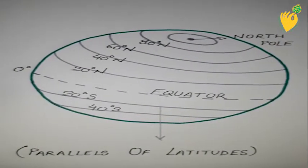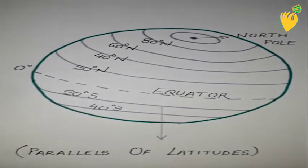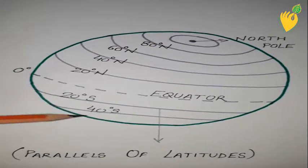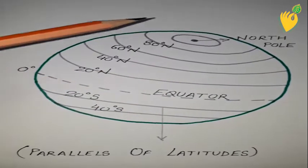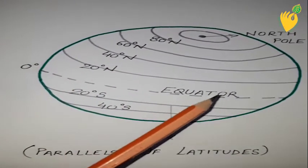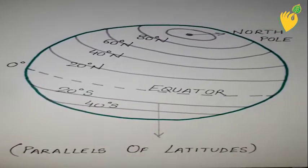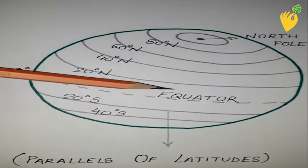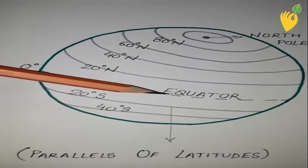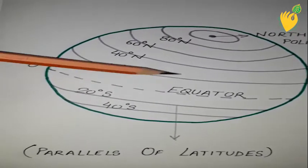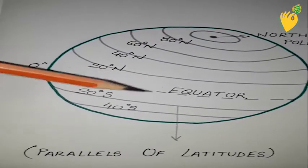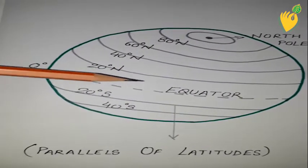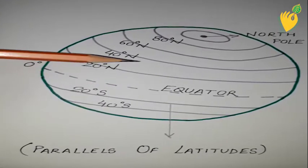Here we have the diagram of parallels of latitude, made for better understanding. A circular shape representing the Earth is given, and the line of the equator is right at the center. The Earth is shown tilted, which is why the equator looks shifted slightly, but it is at the center only. Latitude is an angular distance at a given point from the equator.